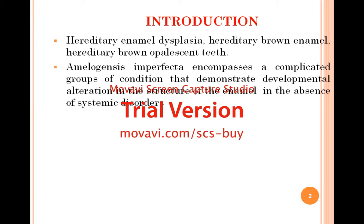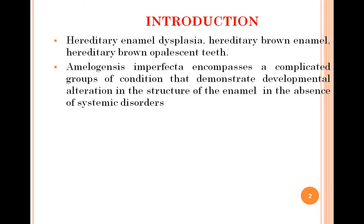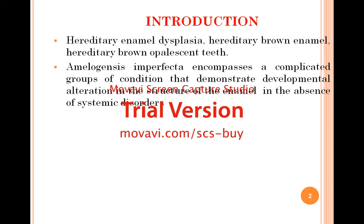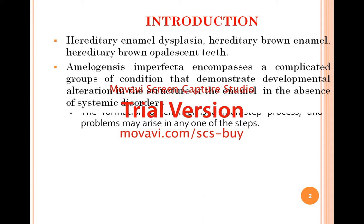Amelogenesis Imperfecta is characterized by hereditary brown discoloration of teeth. It encompasses a complicated group of conditions that demonstrate developmental alterations in the structure of enamel in the absence of systemic disorders.